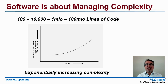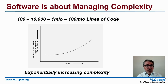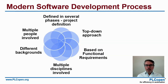Software is about managing complexity. The big problem is that if you double the lines of code, the complexity increases exponentially. Going from 100 to 100,000 lines of code is a serious problem. So for that, we need structuring and modern software development processes.